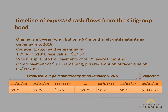I made a small error on the previous slide — I said this bond has five months remaining until maturity, but it really has only four months remaining. Summary of cash flows: a coupon of 1.75% paid semiannually amounts to $17.50, split into two payments of $8.75 every six months. Standing here on January 6, 2018, only one payment of $8.75 remains, plus the redemption of face value on May 1, 2018. So the timeline of expected cash flows is a single cash flow of $1,008.75 on May 1, 2018.